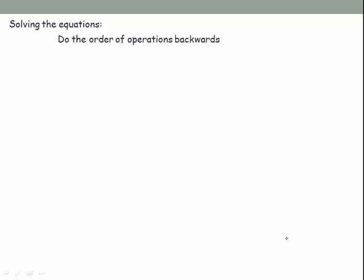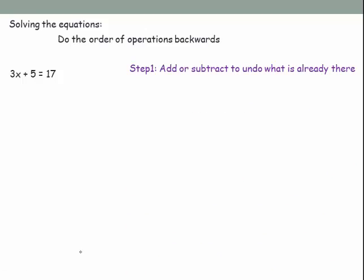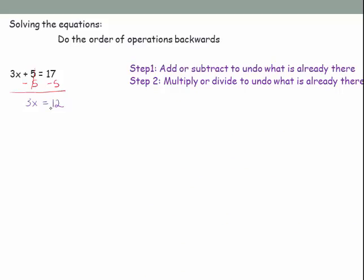When solving, we do the order of operations backwards — add or subtract before we multiply or divide. For 3x plus 5 equals 17: first subtract 5 from both sides, the 5's cancel, leaving 3x equals 12. Then divide both sides by 3 — the 3's cancel — leaving x equals 4.